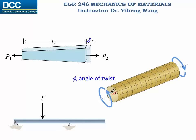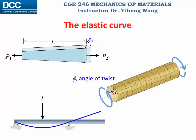For this beam structure subjected to external loadings, we have already learned how to determine its internal shear force diagram as well as its internal bending moment diagram. But how do we quantify the deformation of this beam? From experience, we know that this beam is going to deform along a curve known as the elastic curve, which characterizes the deformation caused by the internal shear force and bending moment. In this video, we will learn how to determine the elastic curve.